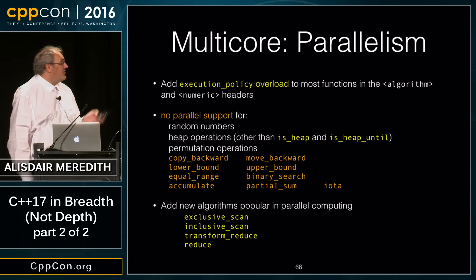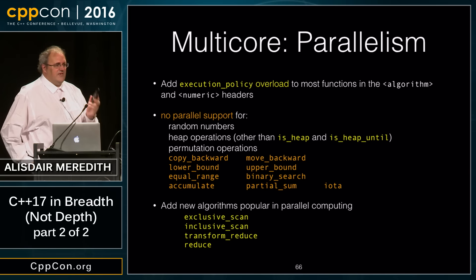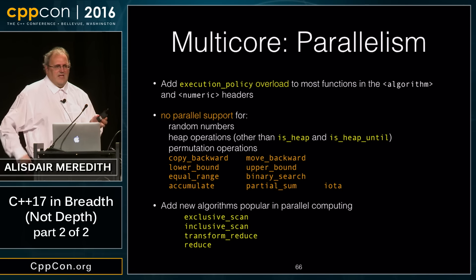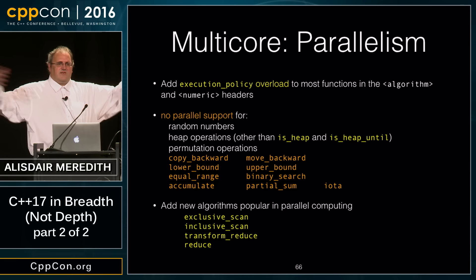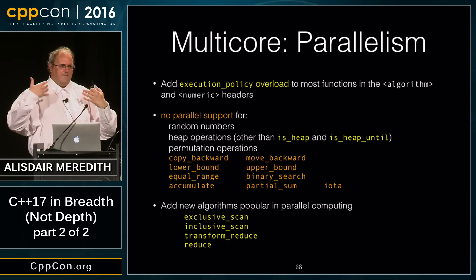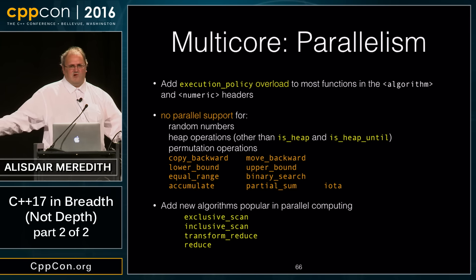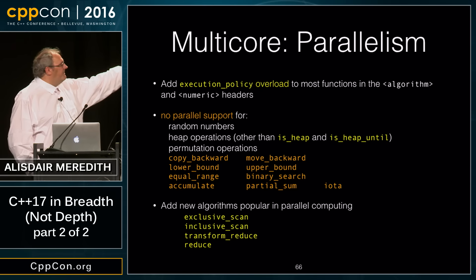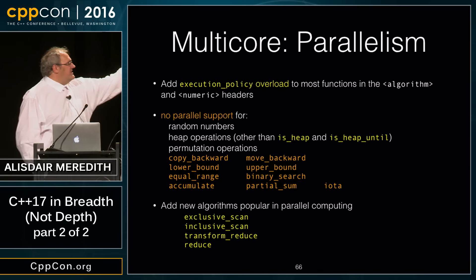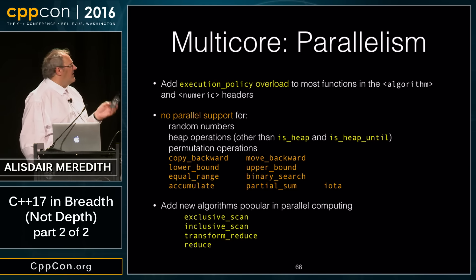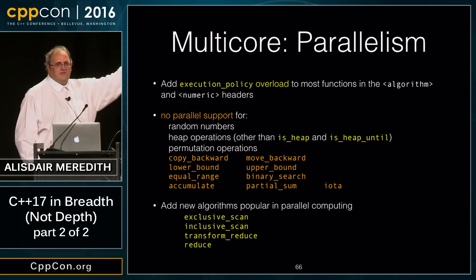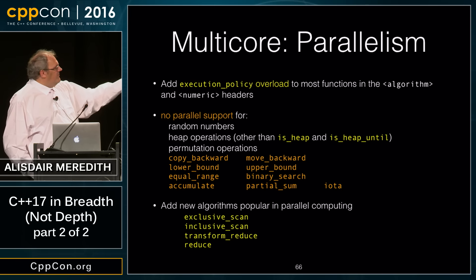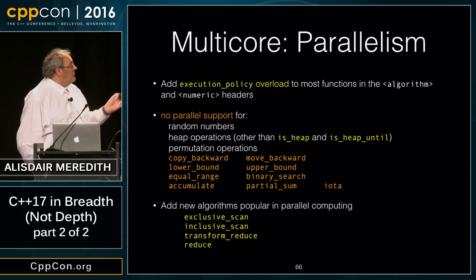We're not providing parallel support for algorithms involving random numbers because parallel random numbers are still an interesting research area — ensuring quality and distribution across threads is a tough topic. Heap operations other than is_heap/is_heap_until won't have parallel overloads. Permutation algorithms are also serial by nature, so they don't get parallel support either.